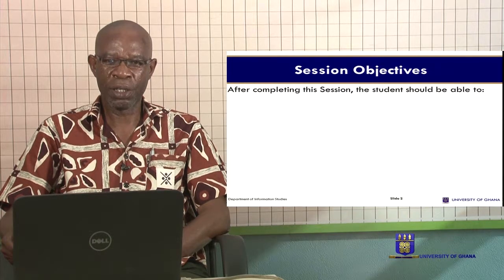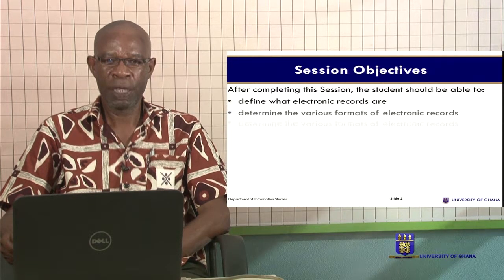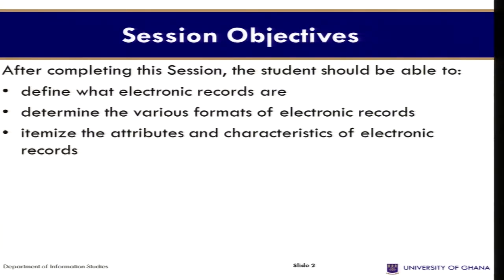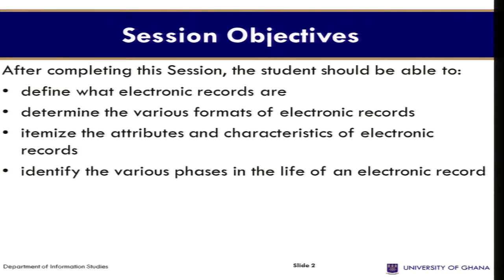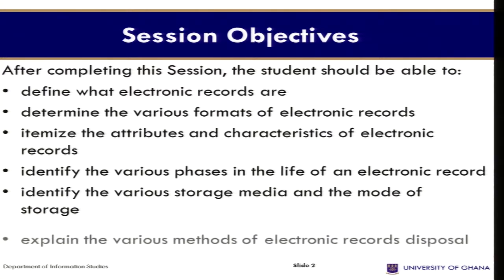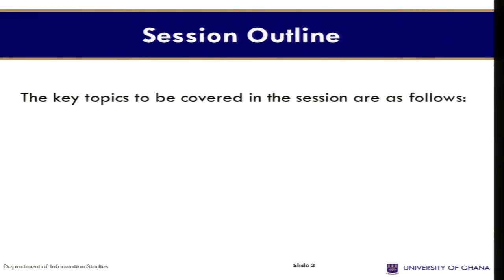At the end of this session, you should be able to define what electronic records are, determine the various formats of electronic records, itemize the attributes and characteristics of electronic records, identify the various phases in the life of an electronic record, identify the various storage media and the mode of storage, and explain the various methods of electronic records disposal.